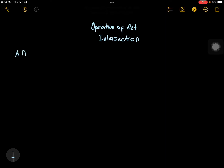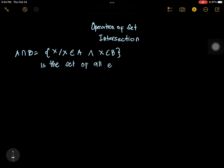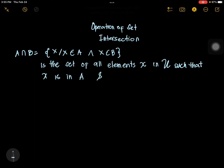Intersection — this is the notation for intersection. It is defined as the set of all X such that X is an element of A and X is an element of B. It means that it's the set of all elements X in the universal set such that X is in set A and X is in set B. That is intersection.